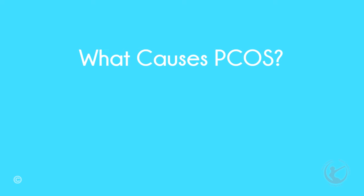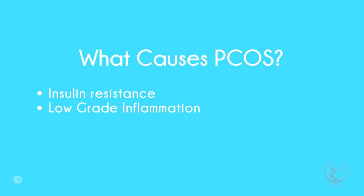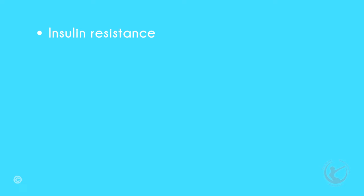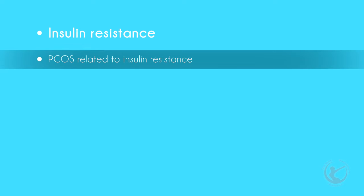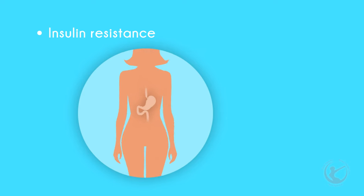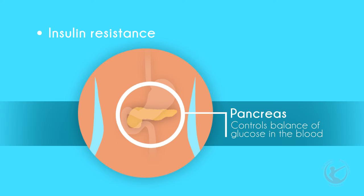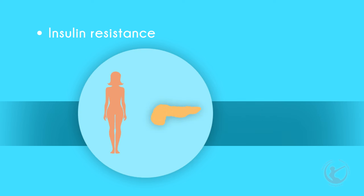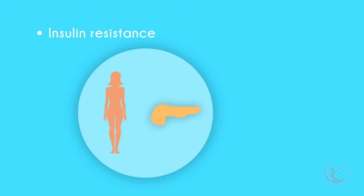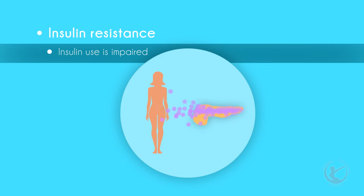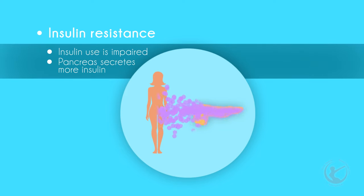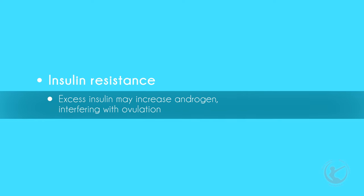What causes PCOS? Insulin resistance, low-grade inflammation, or it may be hereditary or genetic. Research has shown that PCOS is a disease related to insulin resistance. Insulin is a hormone produced by the pancreas which controls the balance of glucose in the blood. Many women with PCOS have too much insulin in their bodies because they have problems using it. If you have insulin resistance, your ability to use insulin effectively is impaired, and your pancreas has to excrete more insulin to make glucose available to the cells. Excess insulin might also affect the ovaries by increasing androgen production, which may interfere with the ovaries' ability to ovulate.